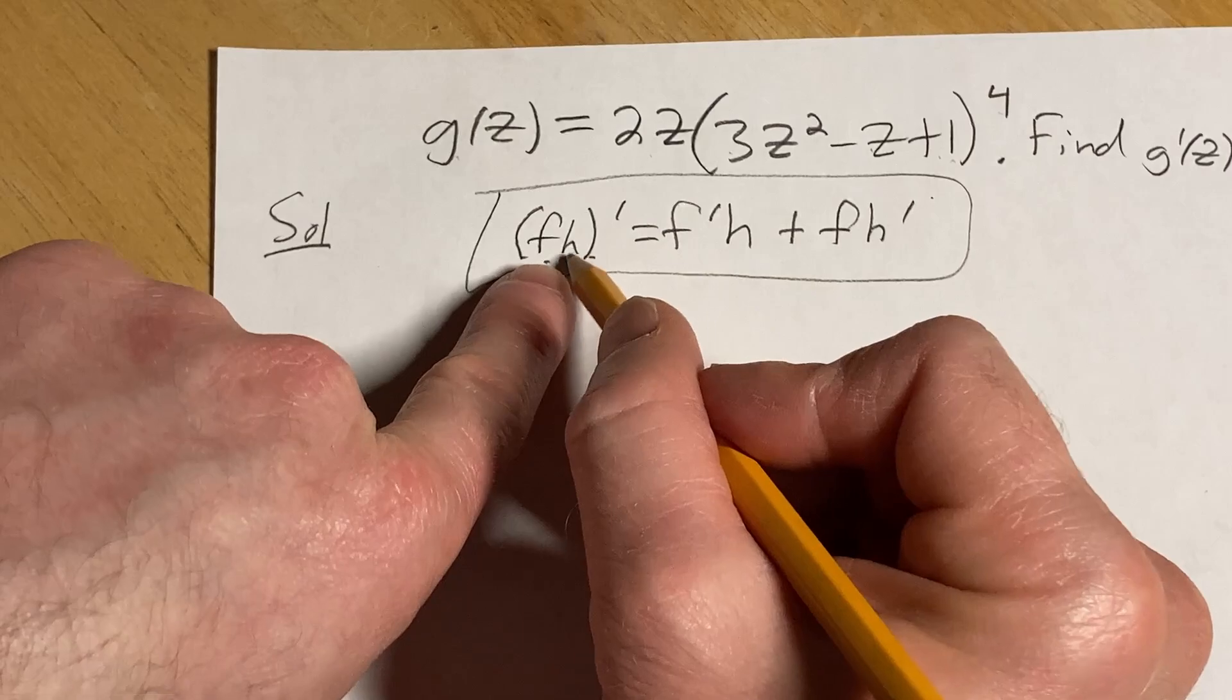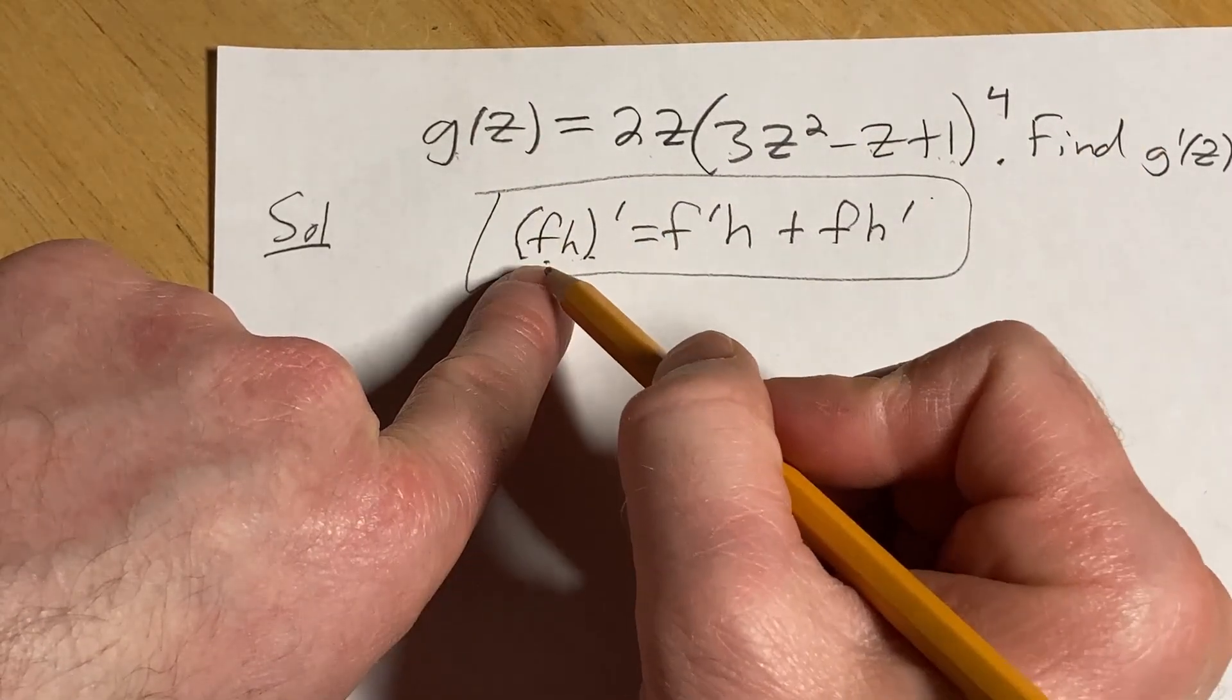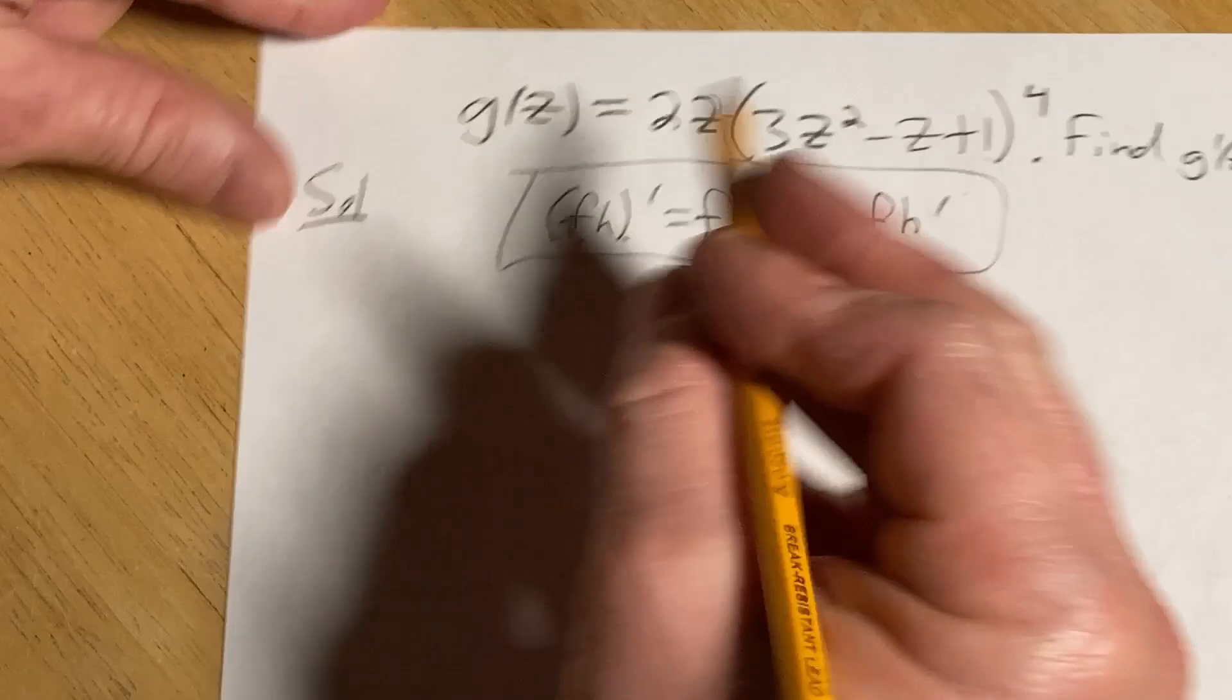Again, people usually use f and g. I'm using h because there's already a g here, but it doesn't really matter. So let's apply the product rule to our example here.